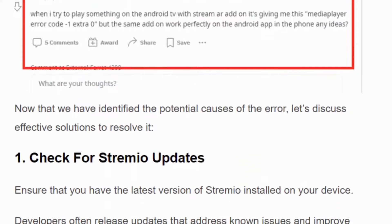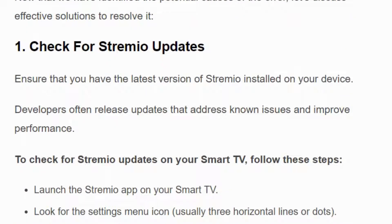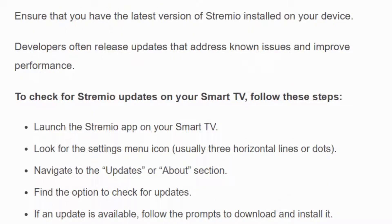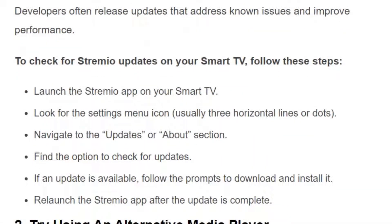Solution number one: check for the Streamio update. Developers often release updates to address known issues and improve performance, so make sure you are using the updated Streamio application. Launch the Streamio app on your smart TV, look for the settings menu icon, navigate to the updates or about section, find the option to check for updates, and if an update is available, follow the prompt to download and install it.